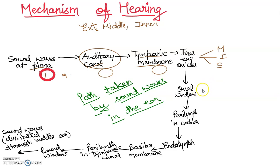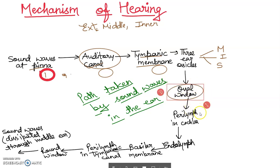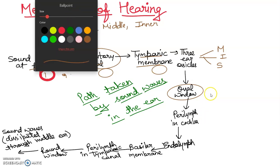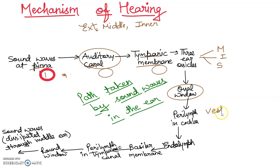As the stapes fits into the oval window, it reaches the perilymph of the cochlea. There is a fluid called perilymph in the vestibular canal. Through the vestibular canal, this perilymph in the cochlea vibrates, and it causes the round window to move to and fro.